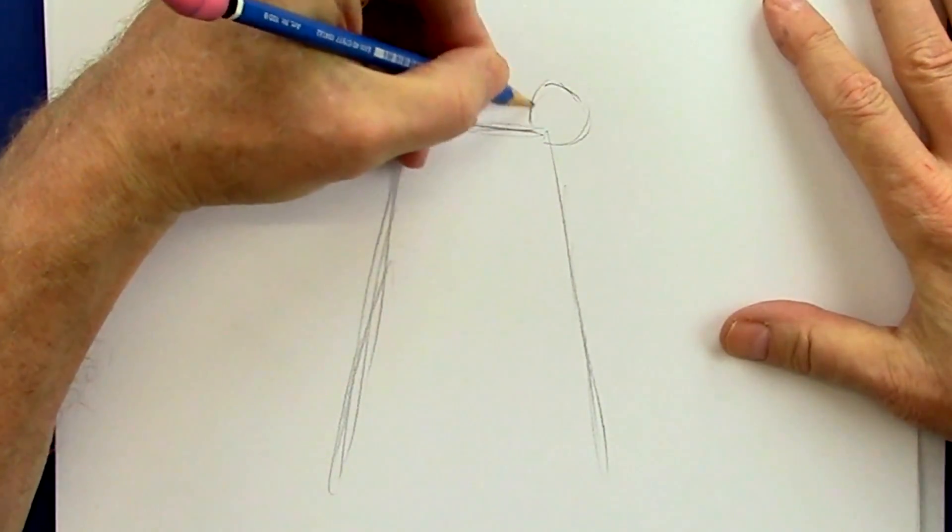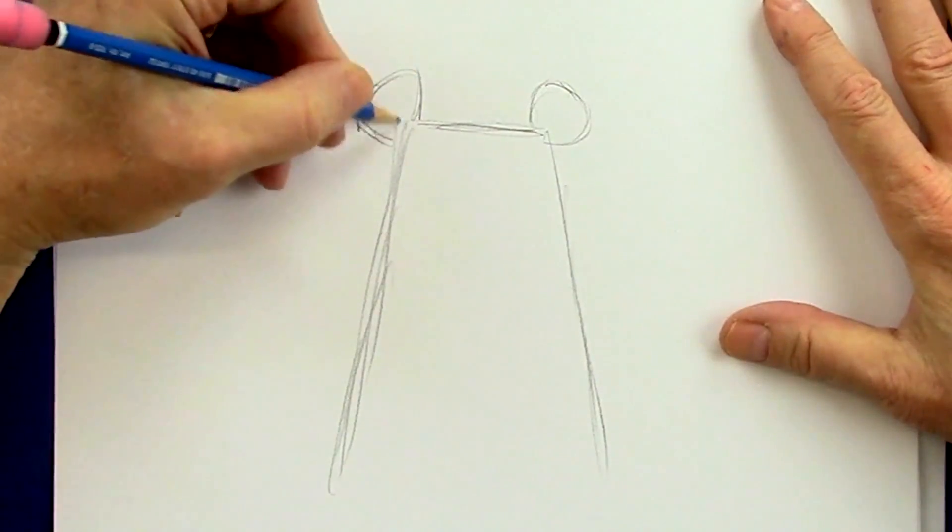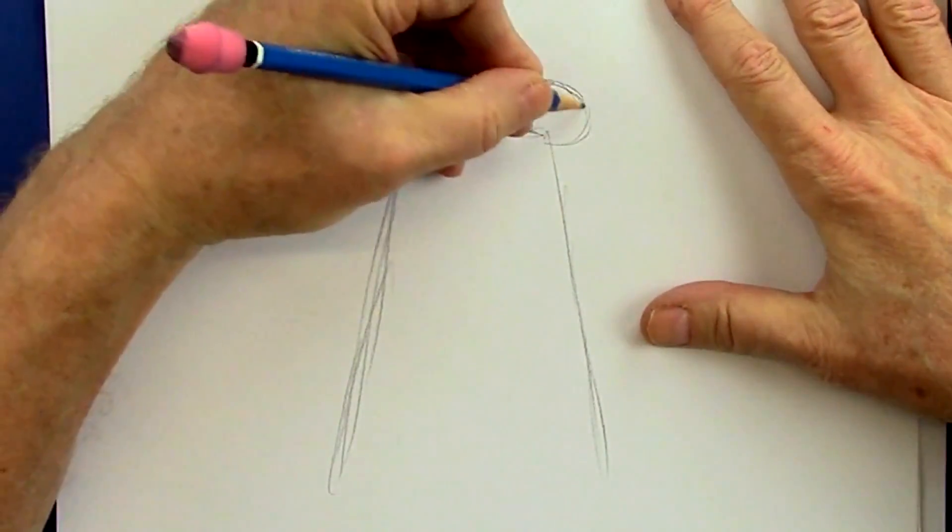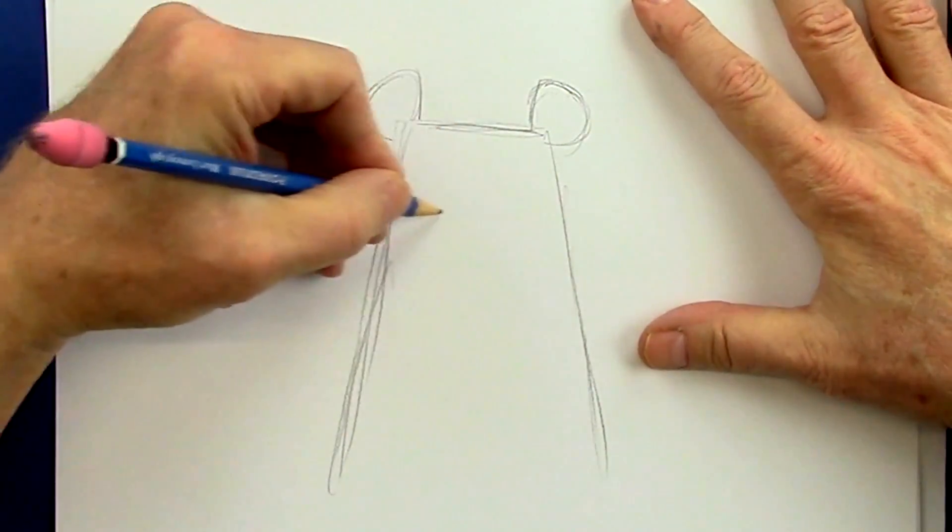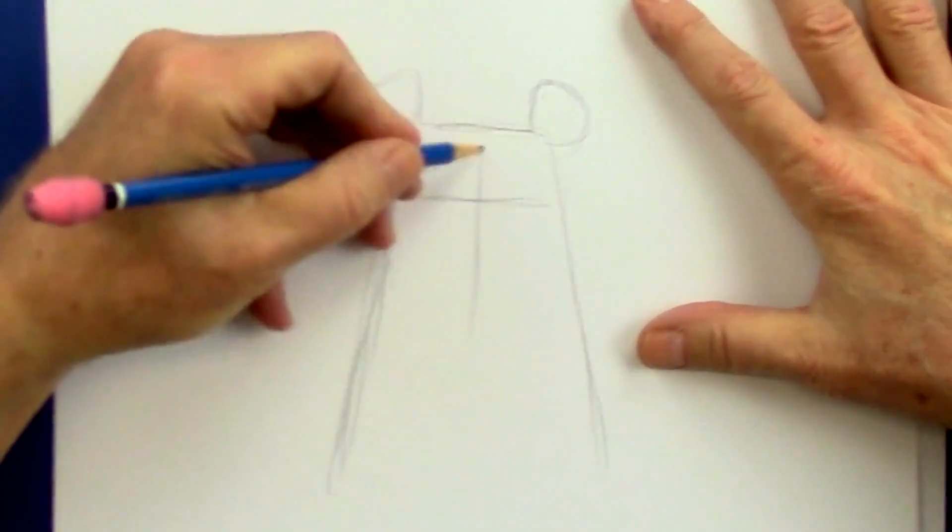We're going to put two ears on the side. And I'm going to do this over again in black when we finish, so you get to see that. Here is the eye line. Here is the nose line, the snout line.